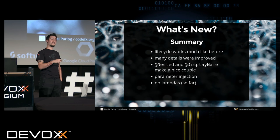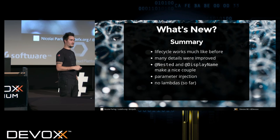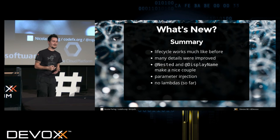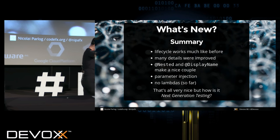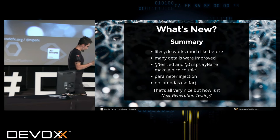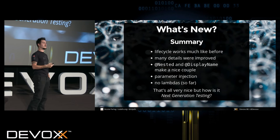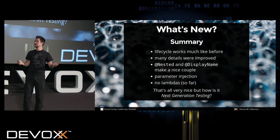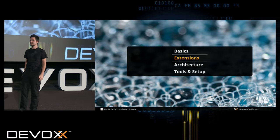In the 45-minute version of this talk, we'd go into dynamic tests and how to use lambdas. In the 30-minute version, we're not doing that. So that's all great — we saw a couple of new things — but the subtitle of the talk is 'next-generation testing,' and this is more like 'nice improvement testing.' So we have to see how that promise comes in.